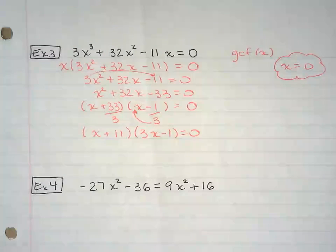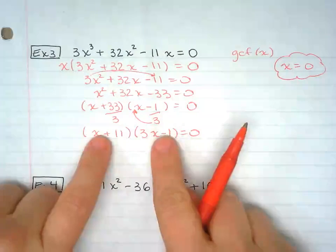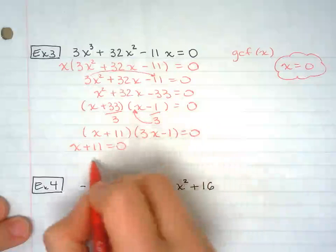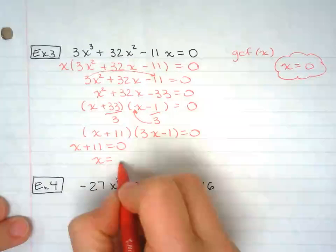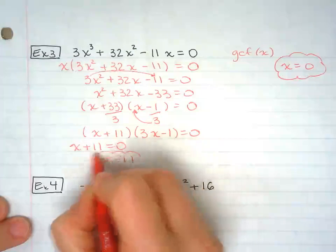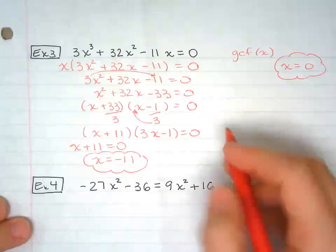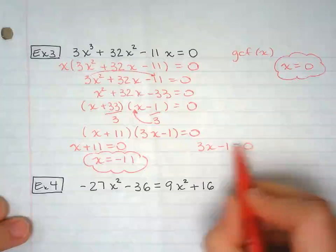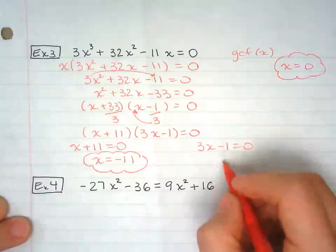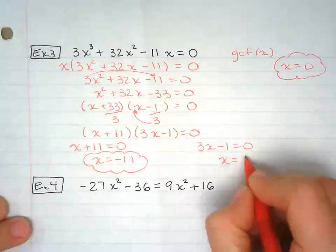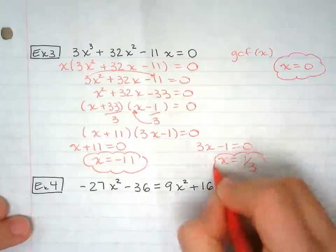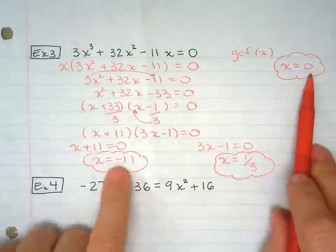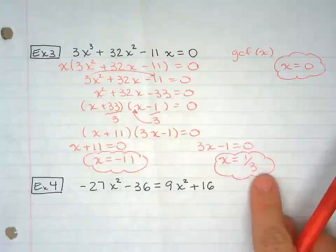At this point, again, we're going to set each factor equal to 0 and solve for x. So x plus 11 equals 0. Minus 11 from both sides, I have negative 11. Now this one, 3x minus 1 equals 0, plus 1 on both sides, divide by 3. So x equals 1 third. So I have three answers. x equals 0, x equals negative 11, and x equals 1 third.